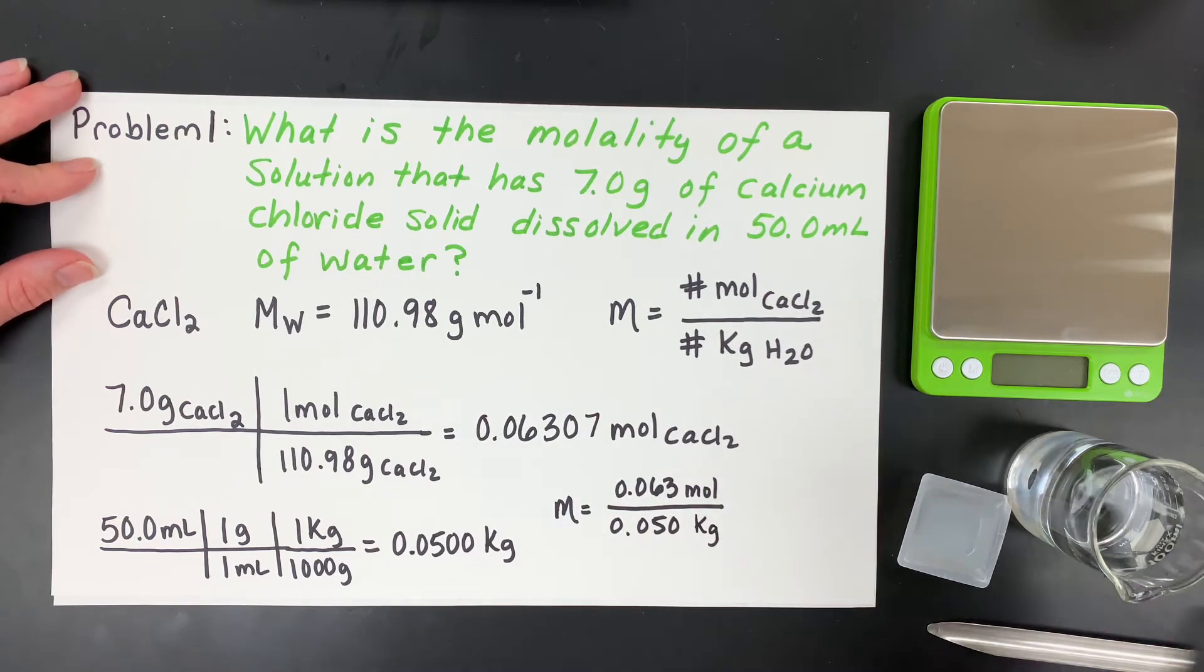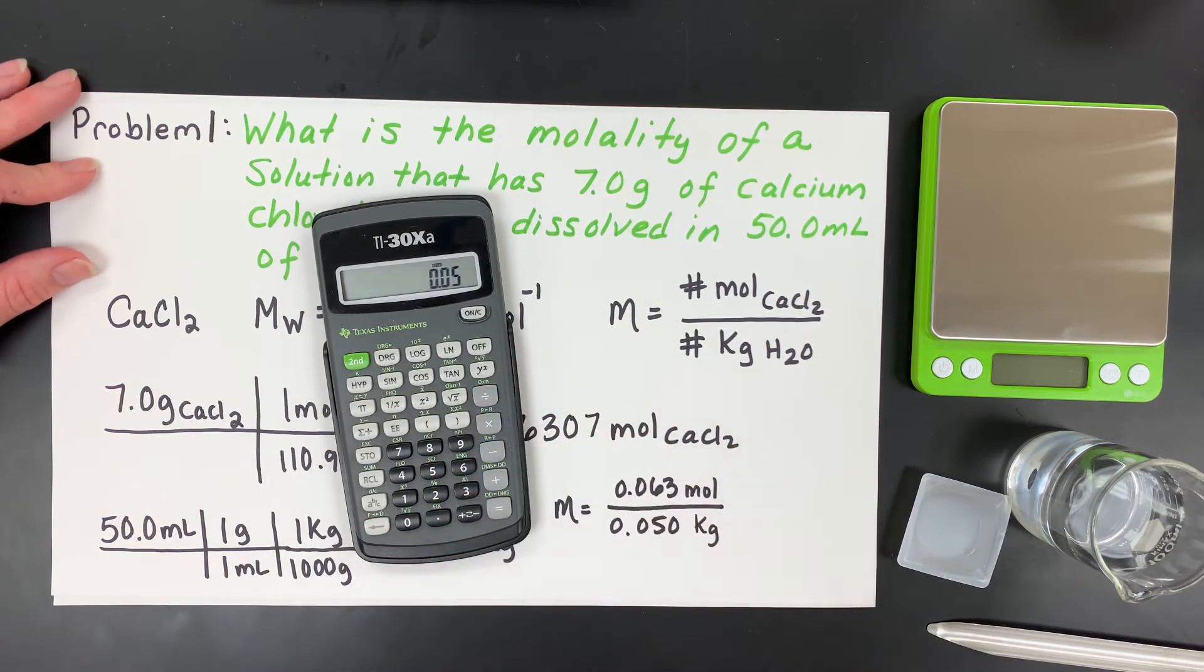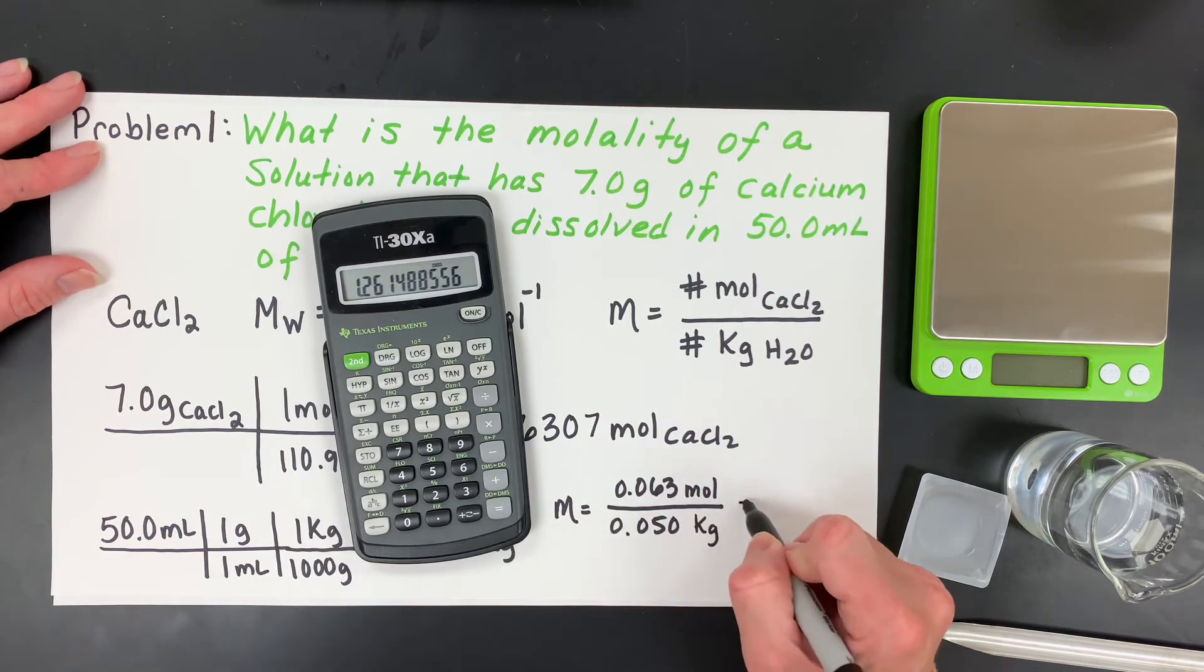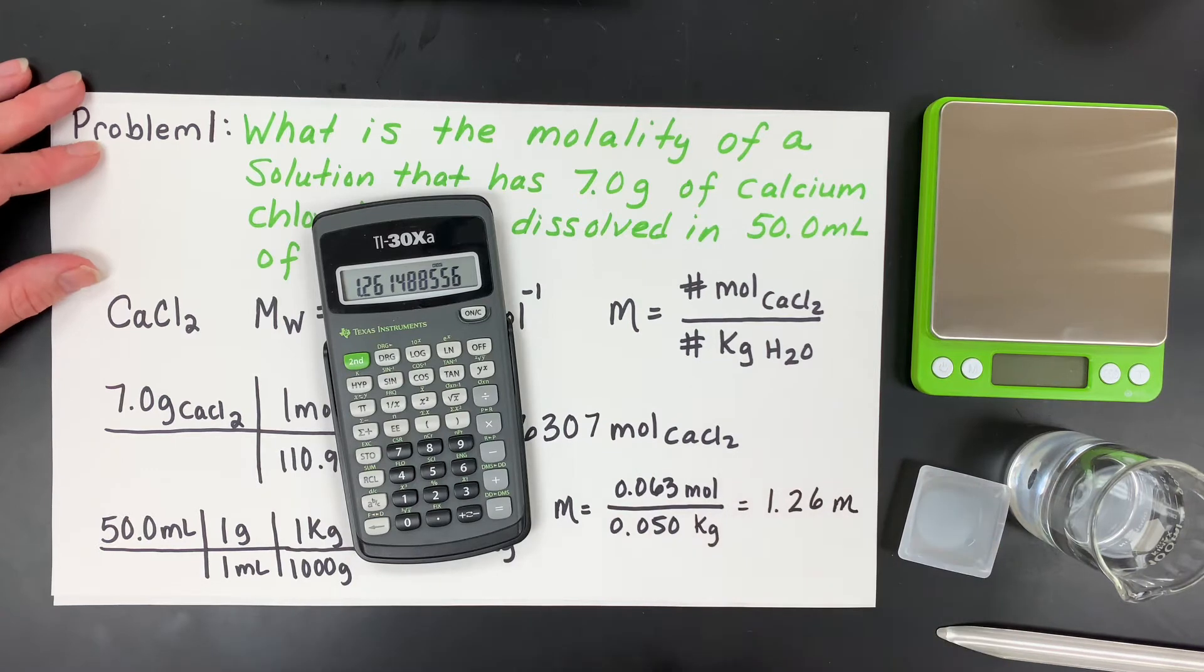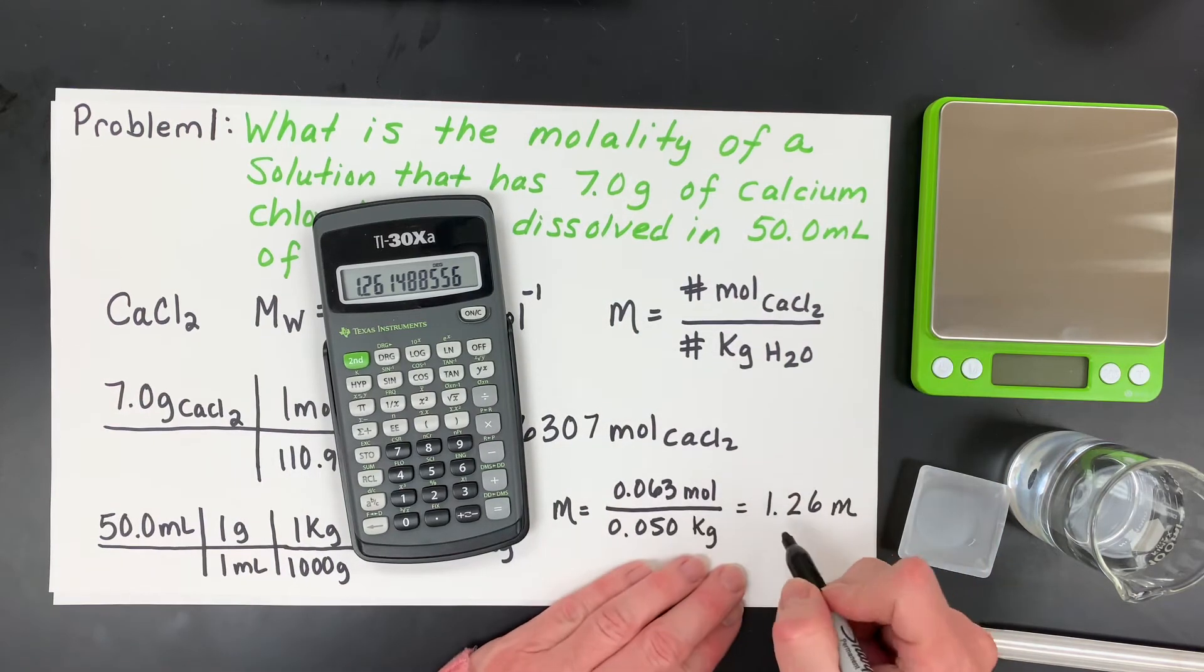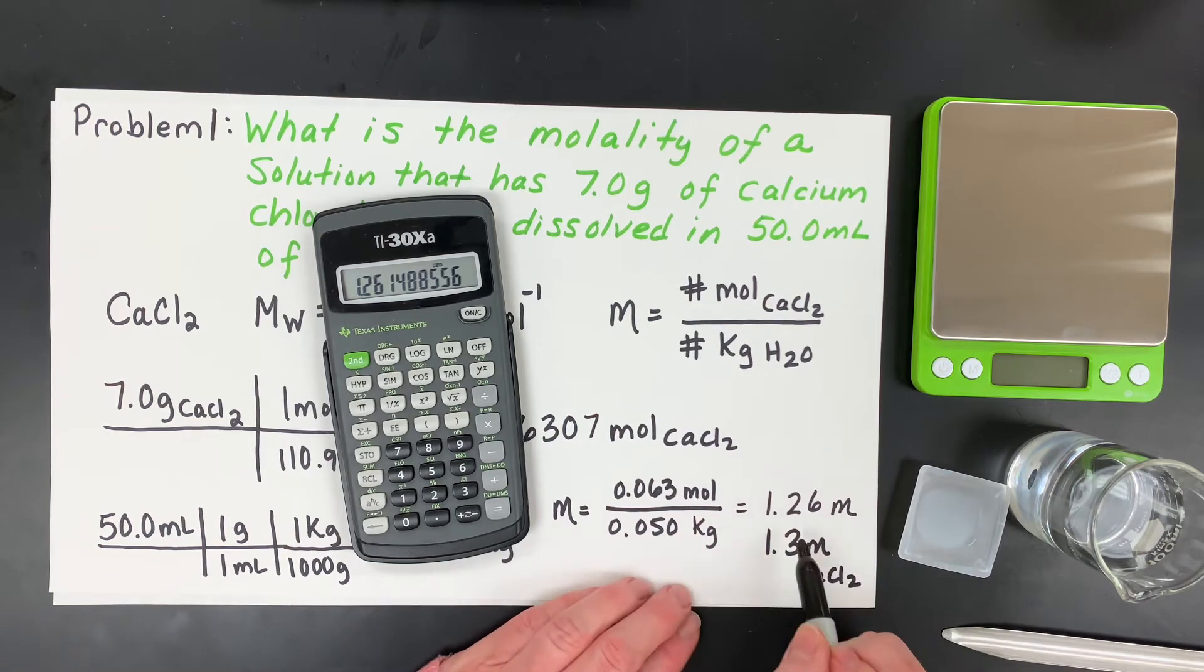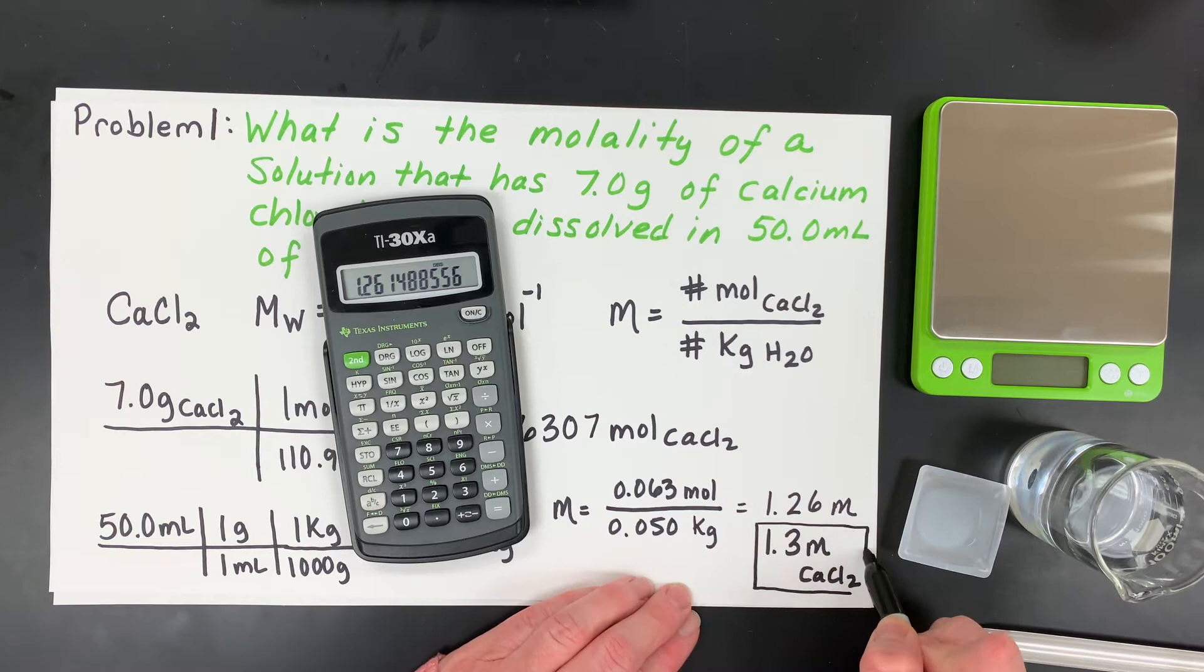And I get 1.26, et cetera. But with significant figures, I can only keep two because of my initial mass, and you'll see that with the balance that I'm using. So I can really only report this to two sig figs. So there's my final answer of the molality.